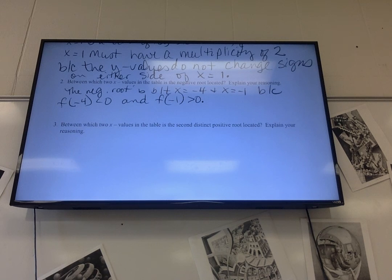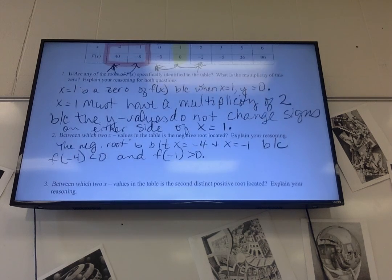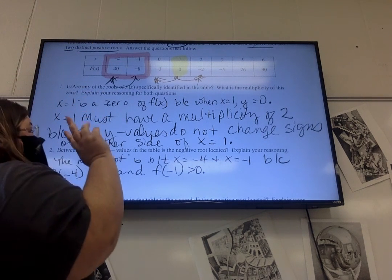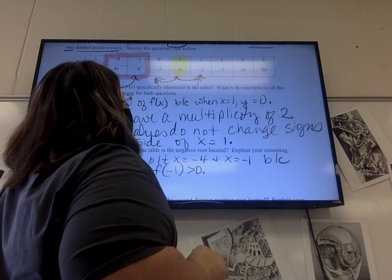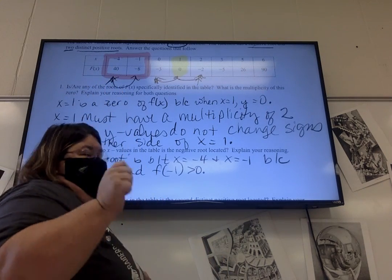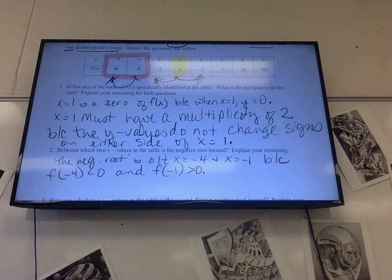All right. Then number three. Between which two values in the table is the second distinct positive root located? Not Tyler, just Tyler. So look at the positive x's. And between which two x's must there be a zero? Um, three and five. Yes. Why? Because it changes signs. So it had to cross the x-axis.